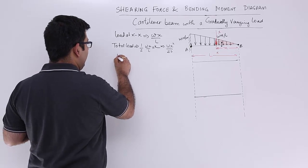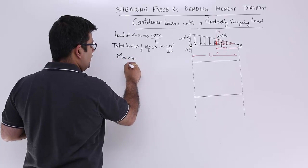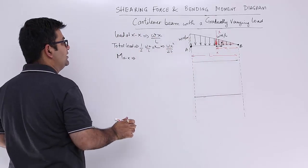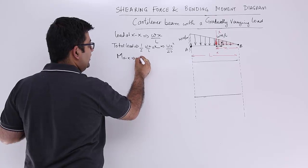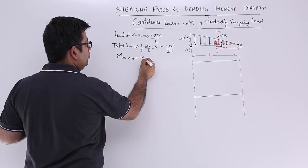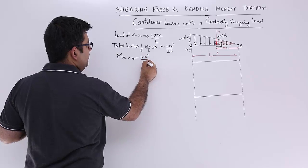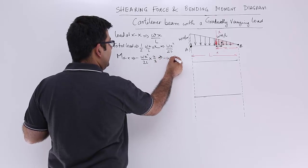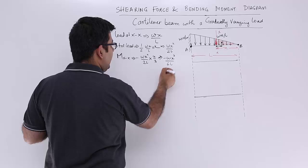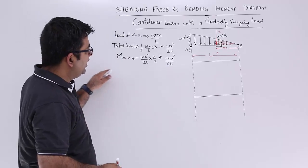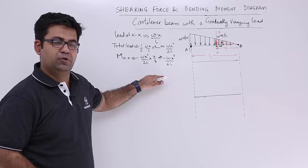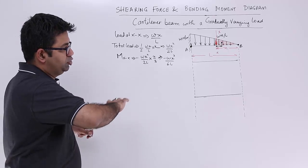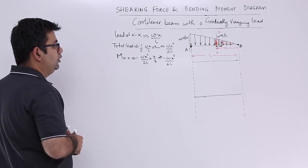Now I have to find out the bending moment at this section. Now this is acting at a distance of X by 3 from the section XX, because it is a triangle. So this will be minus WX square by 2L into X by 3. This will be equal to minus WX cube upon 6L. So this shows a cubic variation for the bending moment, so the graph would be much steeper in its slope as compared to the parabolic variation in the UDL case.